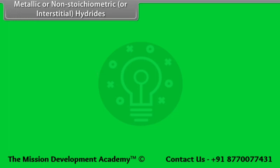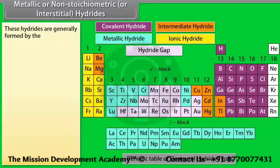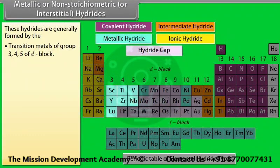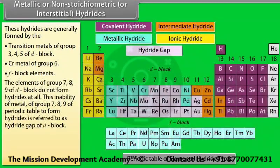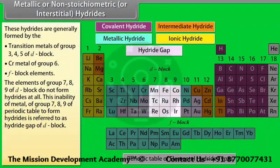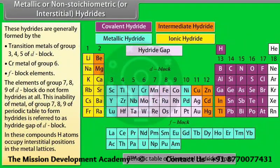Metallic hydrides are generally formed by the transition metals of groups 3, 4, and 5 of the d-block. The elements of groups 7, 8, and 9 of the d-block do not form hydrides at all. This inability of metals of groups 7, 8, and 9 to form hydrides is referred to as the hydride gap of the d-block. In these compounds, H atoms occupy interstitial positions in the metal lattices. Examples include ScH₂ and LaH₂.₈₇.